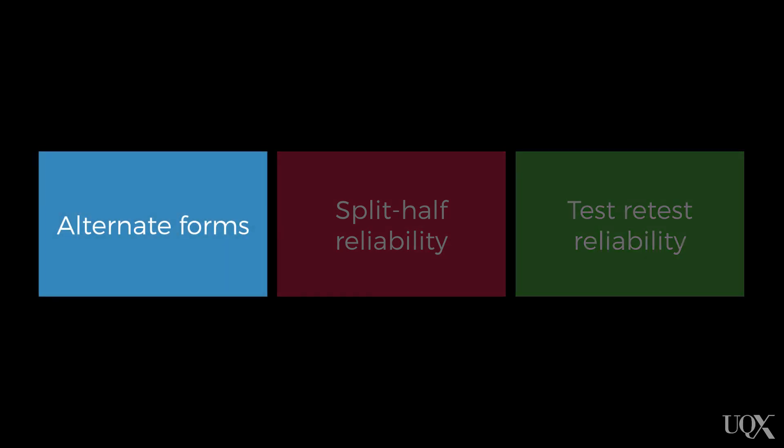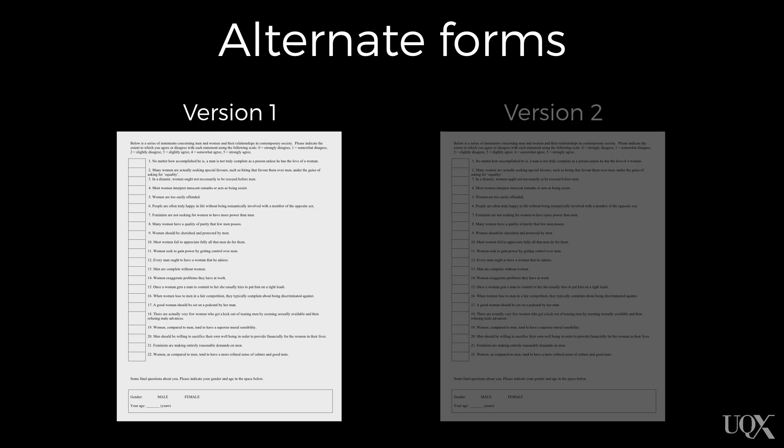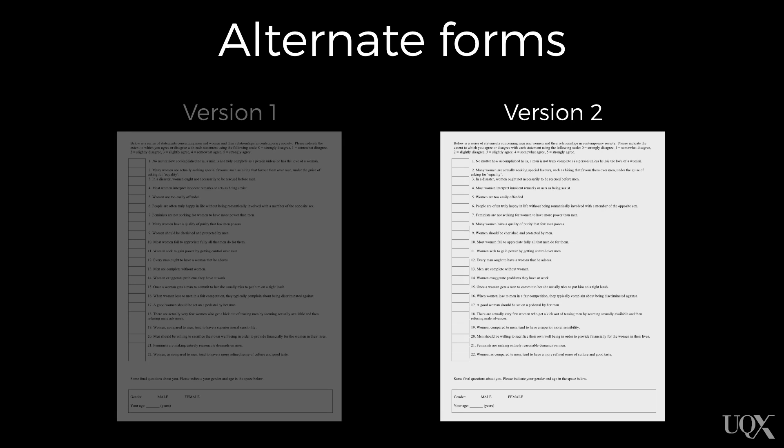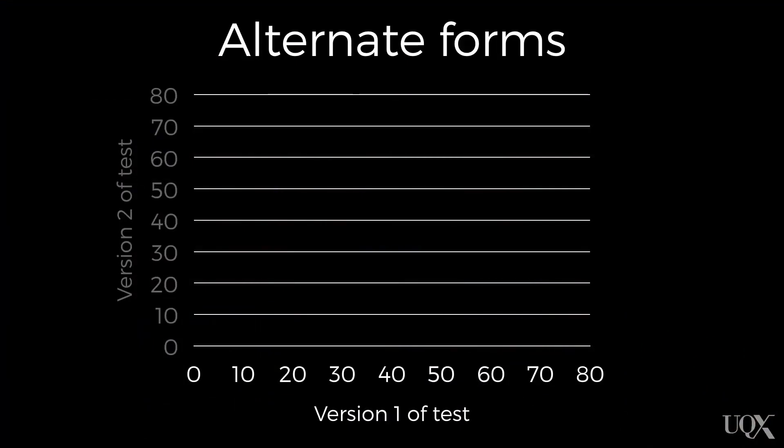Alternate forms reliability involves the evaluation of two different versions of the same test. The scores from the two tests are then compared to see if the test is actually reliable. For example, imagine that my research team has been awarded a million dollars to develop an intelligence test for university students. We used half of that money to develop one version of the test, and developed a second version of the test with the other half. To test reliability, we then asked a large sample of university students to complete both version 1 and version 2, and compared their performance on each.